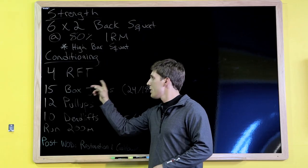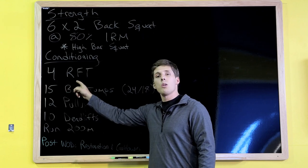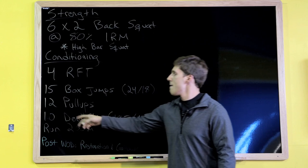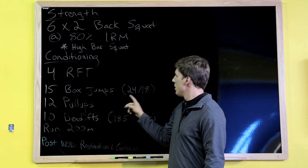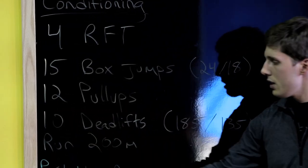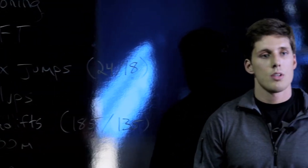Next, we go to our conditioning. For this workout, we're doing four rounds for time. That's what that means. Four rounds for time. Exercises are 15 box jumps, 24 inches for men, 18 for women. 12 pull-ups, 10 deadlifts, run 200 meters.